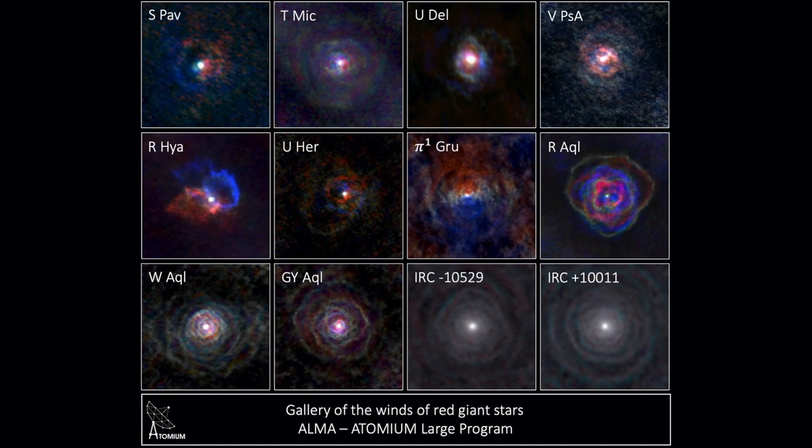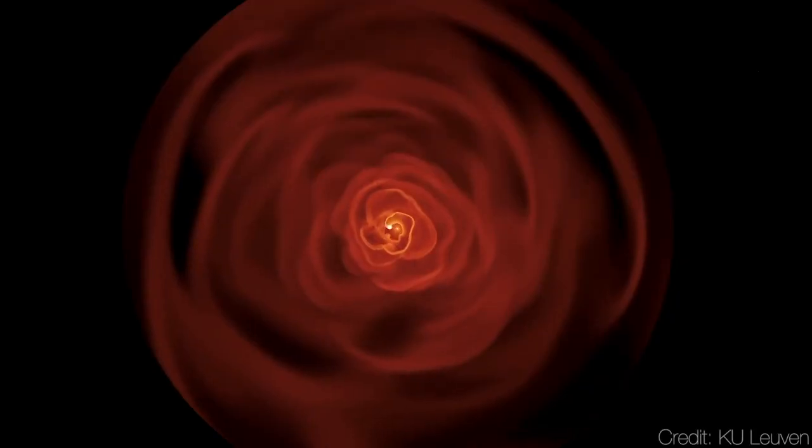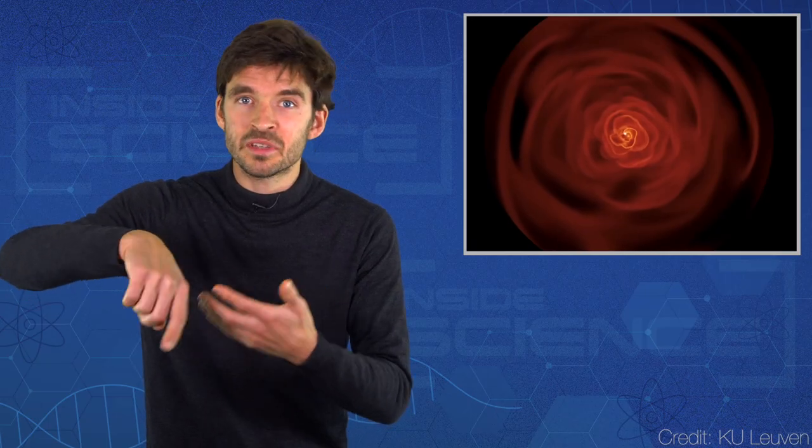To explain this, they suggested that each star has an unseen companion. Another star or a giant planet that circles its dying neighbour, stirring up the space dust like stirring cream into coffee. And eventually that stirring would make these incredible structures.